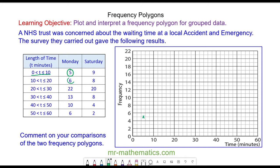The frequency of 6 we're going to plot at 15 minutes, which is halfway between 10 and 20. The 22 at 25 minutes. The frequency of 13 at 35 minutes. The frequency of 10 at 45 minutes. And the frequency of 6 at 55 minutes. Because it's a frequency polygon, we're going to join these coordinates together in order with straight lines.